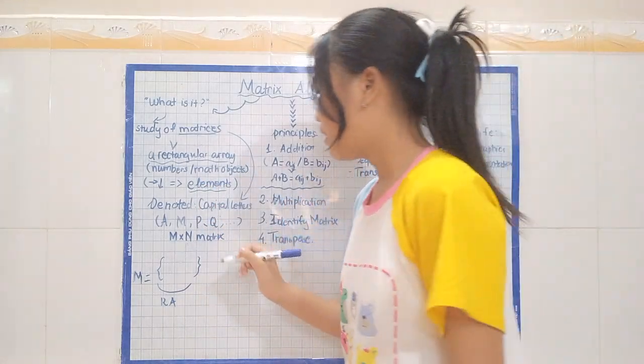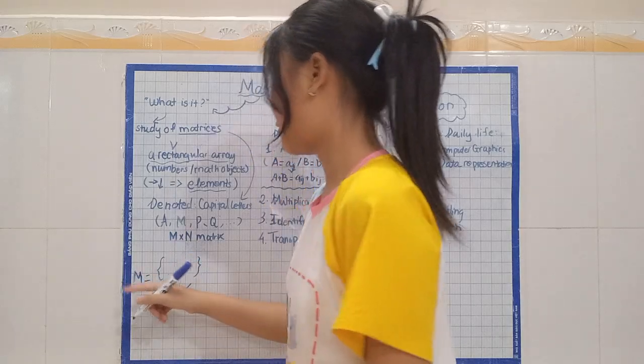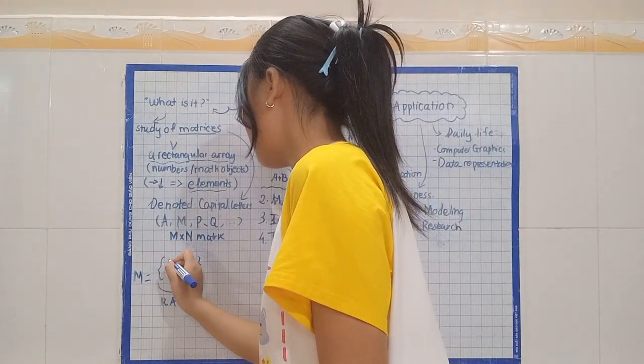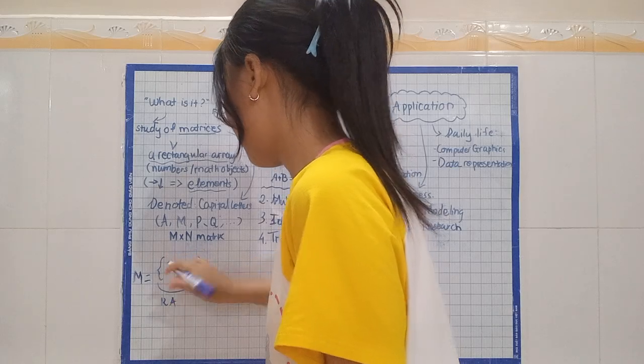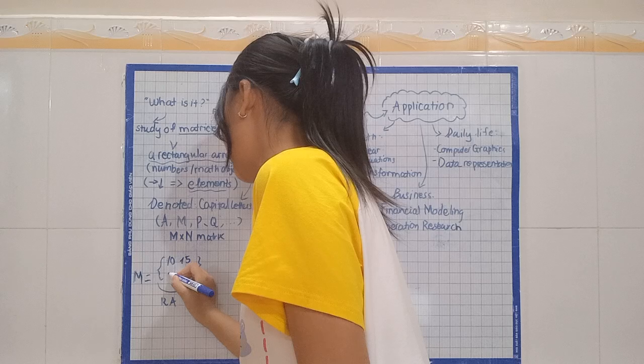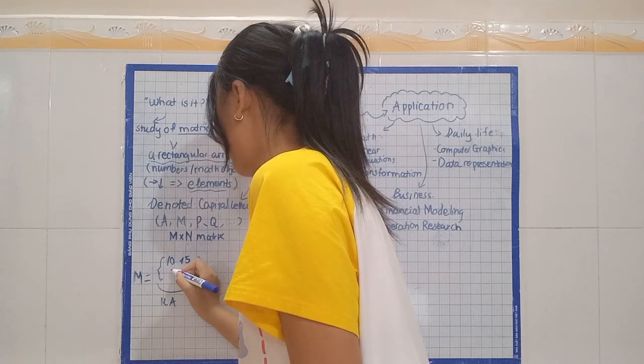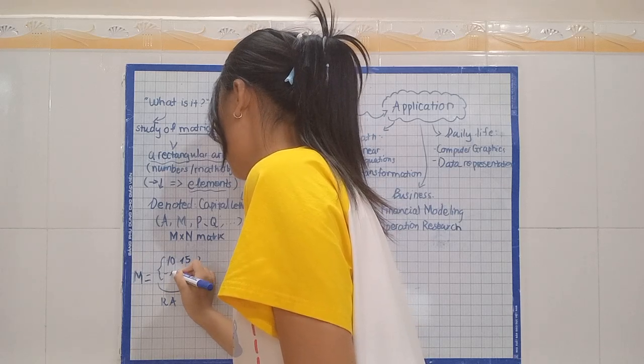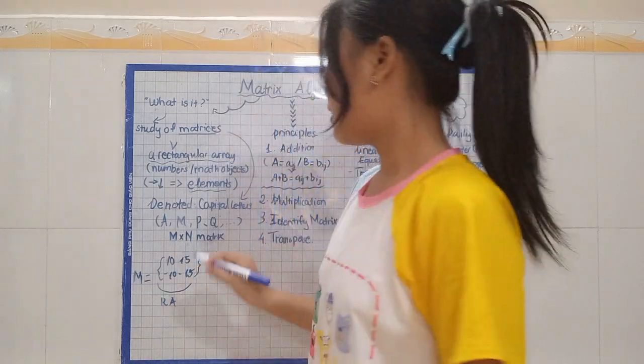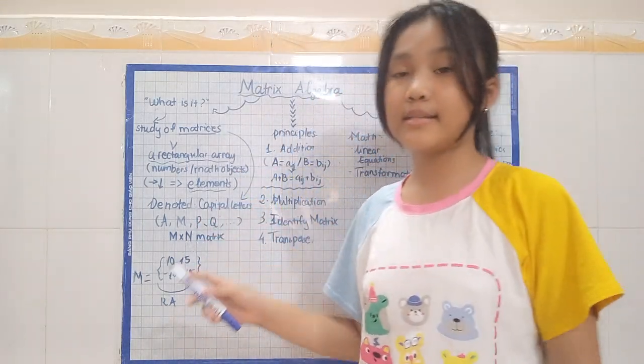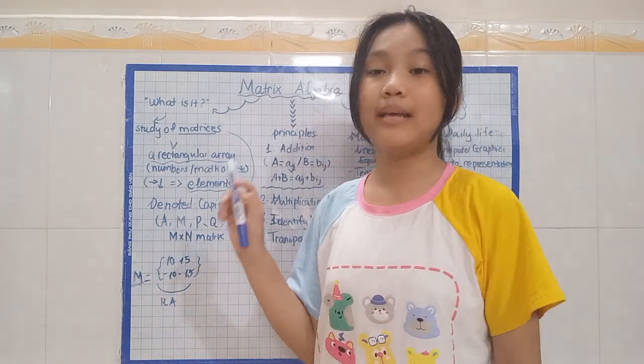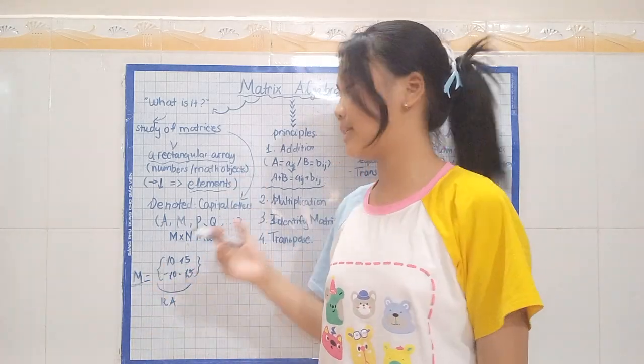Let me show you. Here, let us have matrix M. We have, let's say, 10, 15. So here is our matrix M, and this is a basic matrix that everybody could know.